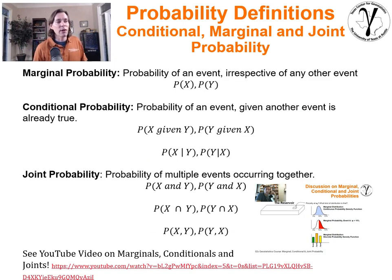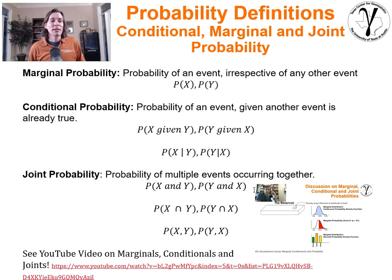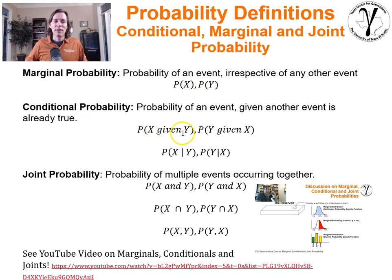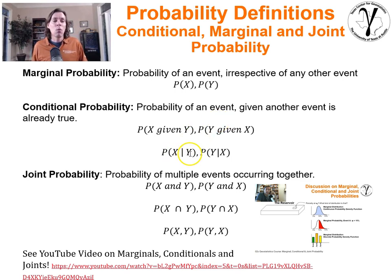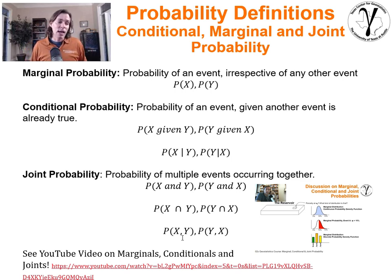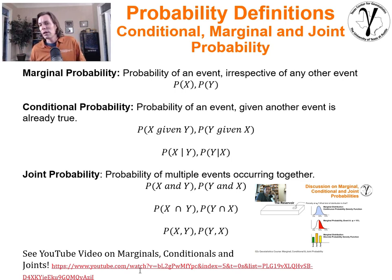In the notation moving forward, marginal probabilities are simply a probability for one event or one variable at a time, represented as probability of x or y. Conditional probabilities are written as probability of x given y, using a vertical line to indicate 'given.' Joint probabilities use the intersection symbol or just a comma. There's a linked YouTube video with roughly a 10-minute discussion on conditional, joint, and marginal probabilities, showing how to calculate them and move between them.